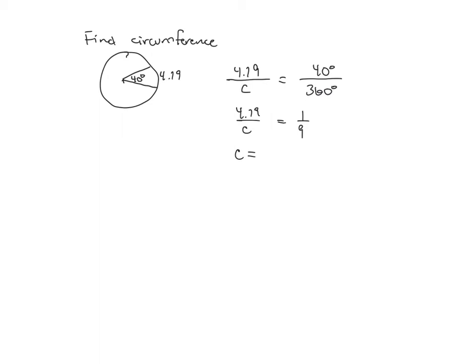And then when you multiply the diagonals, C times one is just C, and nine times 4.19 is 37.71. So it could, if it could ask like, what's the radius, then you'd have to kind of go back and plug it into, if the circumference is 37.71, go back and plug it into the circumference formula and solve for r. But I think most of them will just say find the circumference.